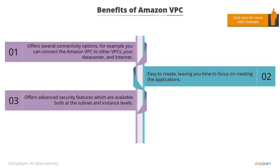Third, Amazon VPC offers advanced security features such as ACLs and security groups to filter inbound and outbound traffic. These features are available at the subnet and instance levels. You can even restrict access to stored data so that it is accessible only from instances in the VPC. AWS also lets you run instances on hardware of a single user for additional isolation.